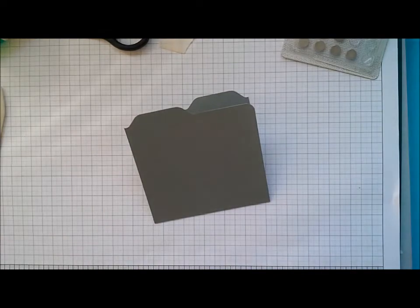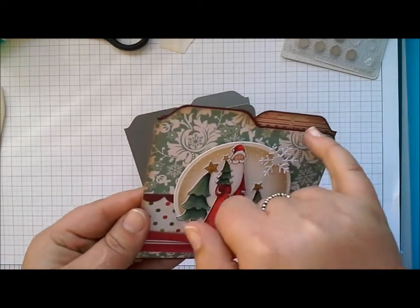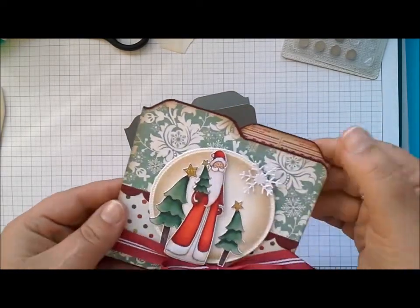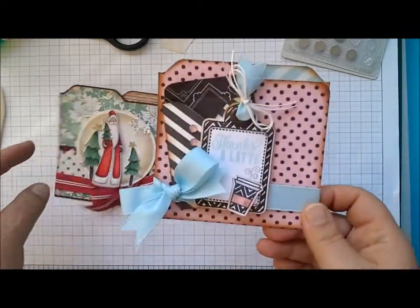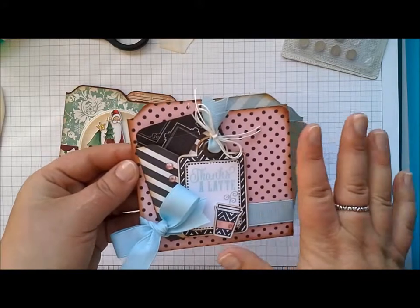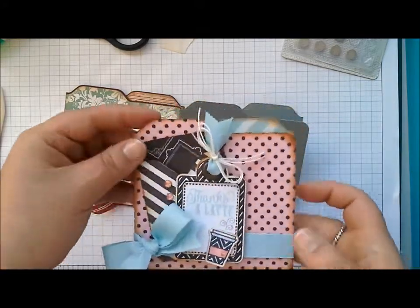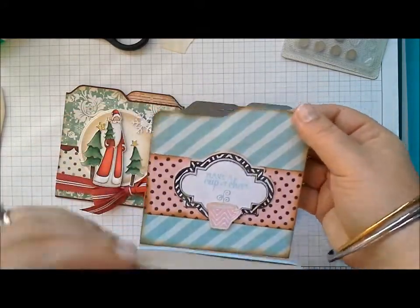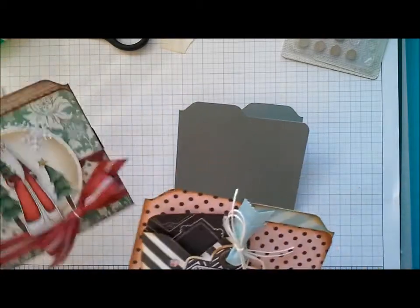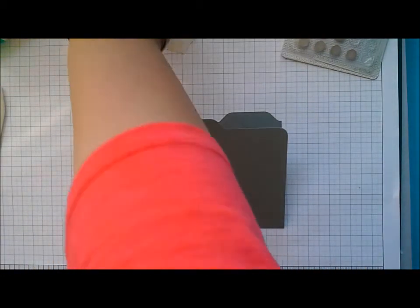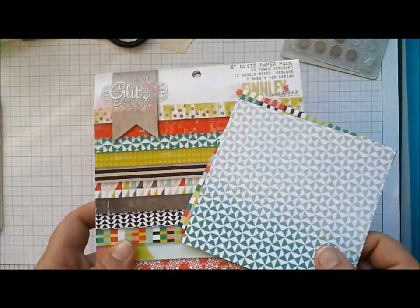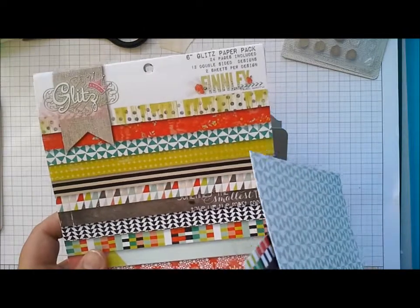For this card I've left a little border where the patterned paper meets the cardstock. Here's another version that I did recently with Verve stamps. That one I've completely covered the entire card front both inside and out. So depending on the look you want, I'm using some patterned paper from Glitz, this is the Finley collection.